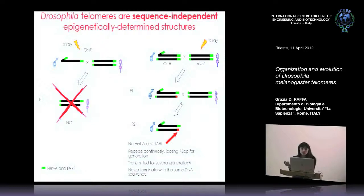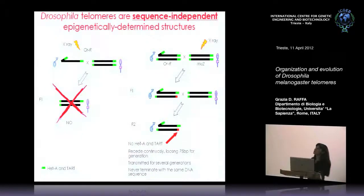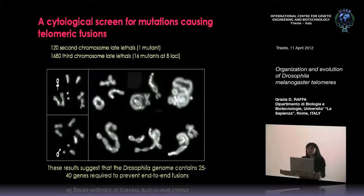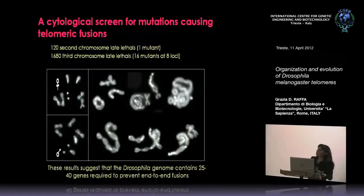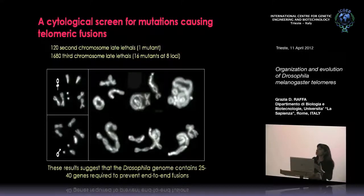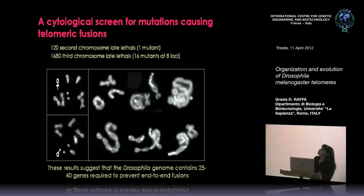So we started looking for the proteins involved in this form of sequence-independent capping. To search for these proteins, we used a genetic approach based on the prediction that mutations in genes important for telomere protection should induce a telomere instability phenotype — that is, telomeric fusions. For this reason, we analyzed a collection of 1800 late lethals whose development until late larval stage is supported by maternal contribution, making it possible to analyze the status of mitotic chromosomes from squashes of larval neuroblasts. After this screening, we identified nine new genes important for telomere protection.